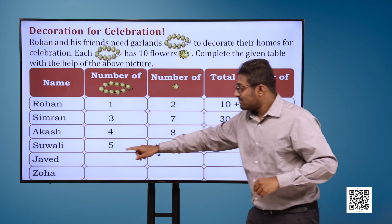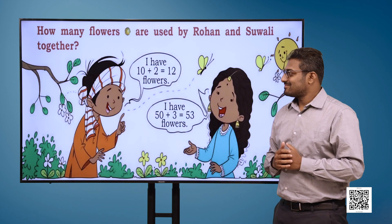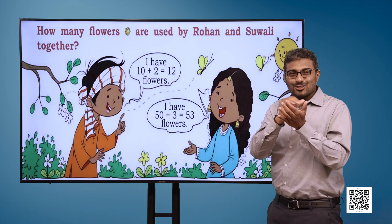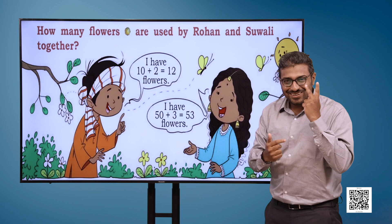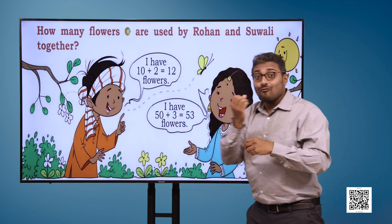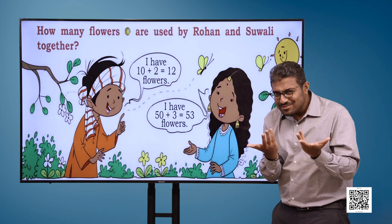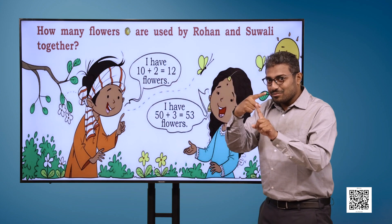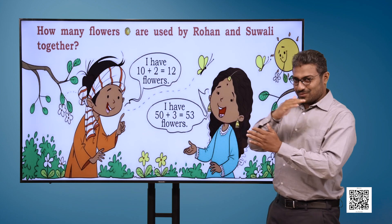Now finish this table for Javed and Zohar. How many flowers are used by Rohan and Suwali together? In the image we can see Rohan and Suwali conversing with each other. Rohan says: I have 10 plus 2 is equal to 12 flowers. Suwali says: I have 50 plus 3 which is equal to 53 flowers.